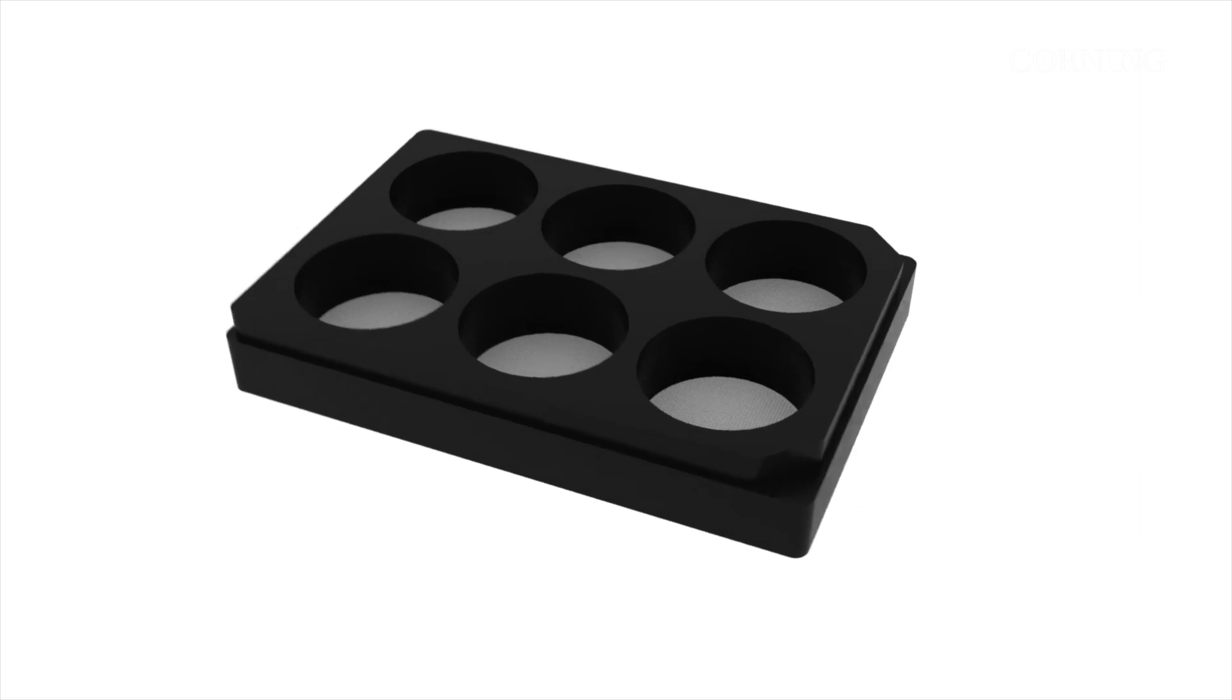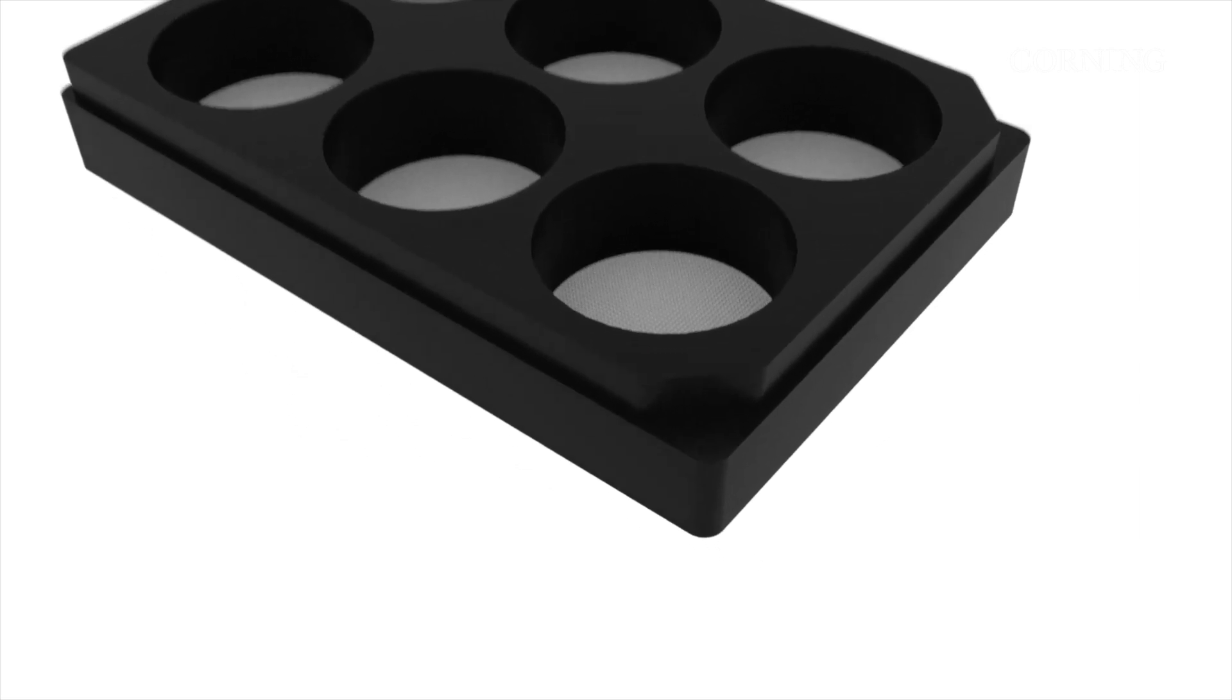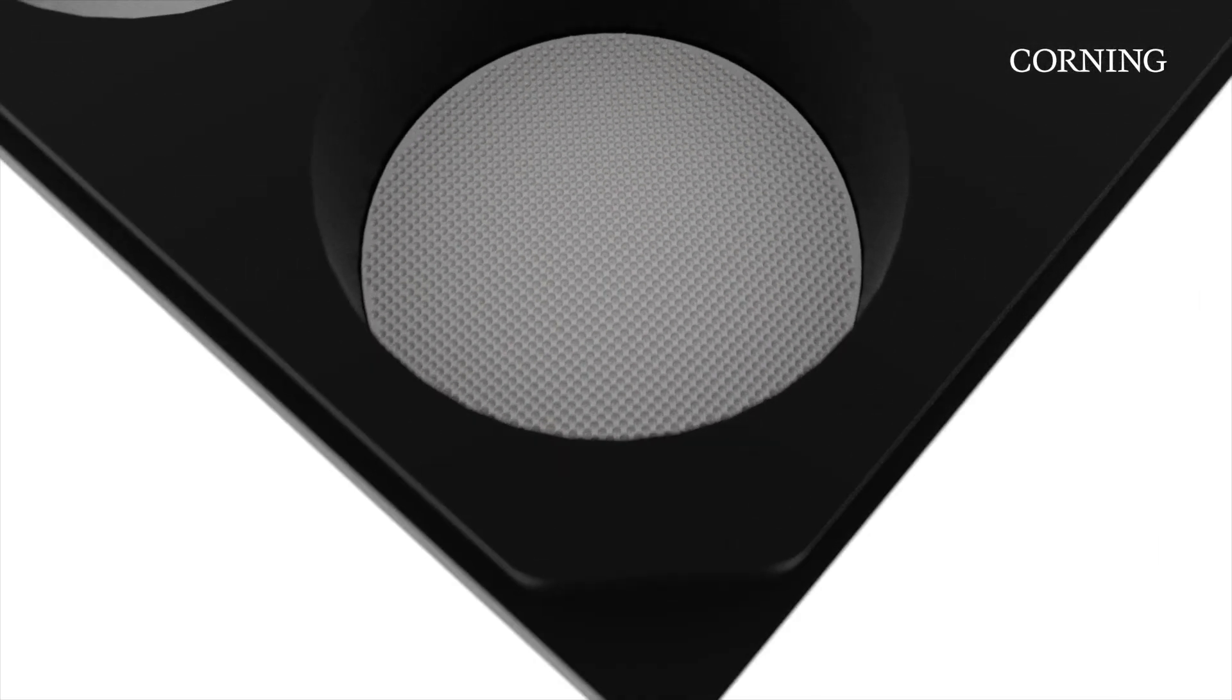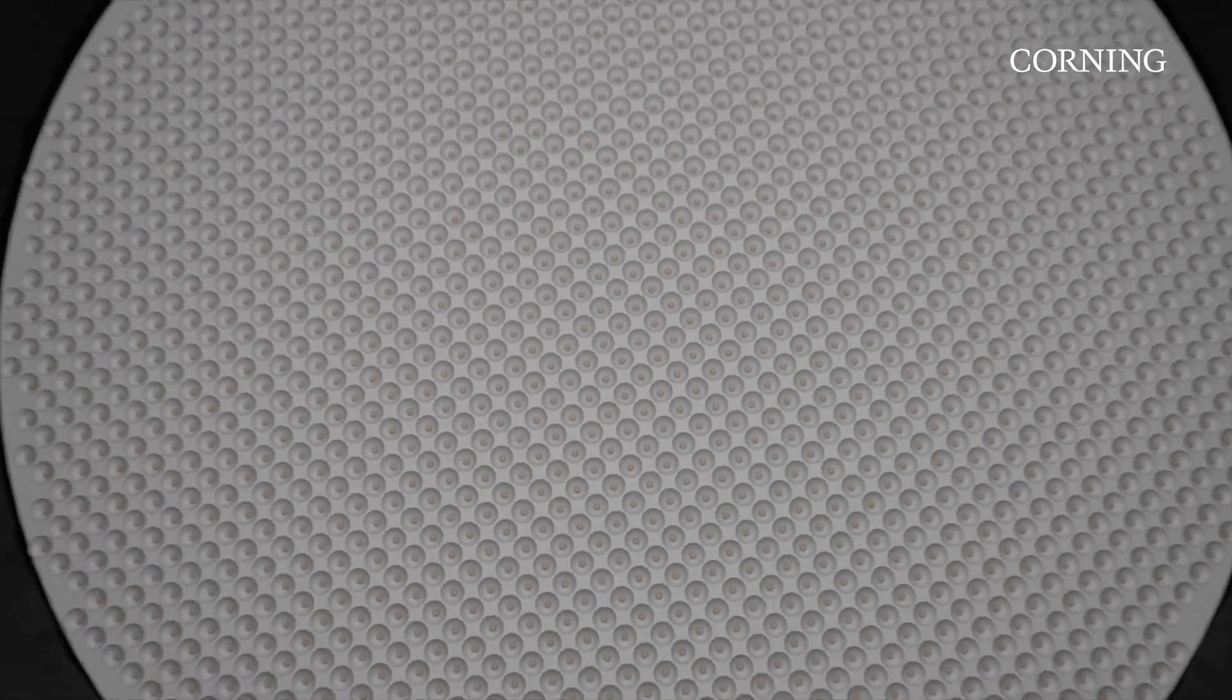Corning Elplasia plates feature micro-cavity technology that simplifies high-volume spheroid production and gives you the ability to generate and culture hundreds to thousands of spheroids per plate under uniform culture conditions.